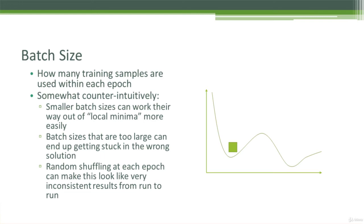It turns out that smaller batch sizes can do that more effectively than larger ones. So a small batch size can wiggle its way out of these local minima, but a large batch size might end up getting stuck in there, like basically weighing it down.